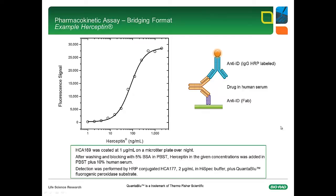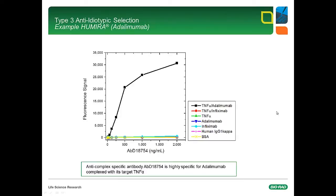Here, the specificity of a type 3 antibody binding to the drug adalimumab bound to its target TNF-alpha is shown. Various antigens, including TNF-alpha, were coated at 5 µg per ml on a microtiter plate overnight. The wells were washed and blocked with BSA. For the antigen complexes, either adalimumab or infliximab was then added to the TNF-alpha coated wells. After additional washing, HRP-conjugated type 3 antibody was added in a dilution series. Detection was performed using fluorogenic peroxidase substrate. This type 3 antibody only binds the complex of adalimumab bound to its target TNF-alpha. Neither adalimumab nor TNF-alpha alone, or the complex of TNF-alpha with infliximab, is recognized.